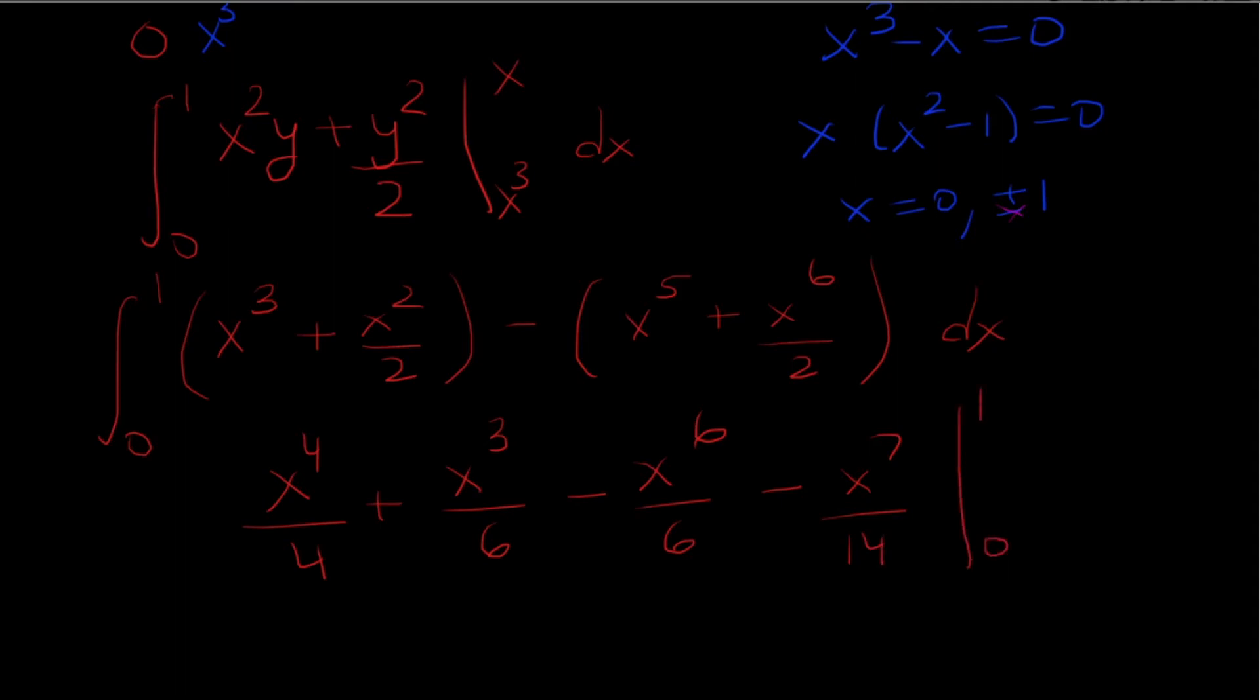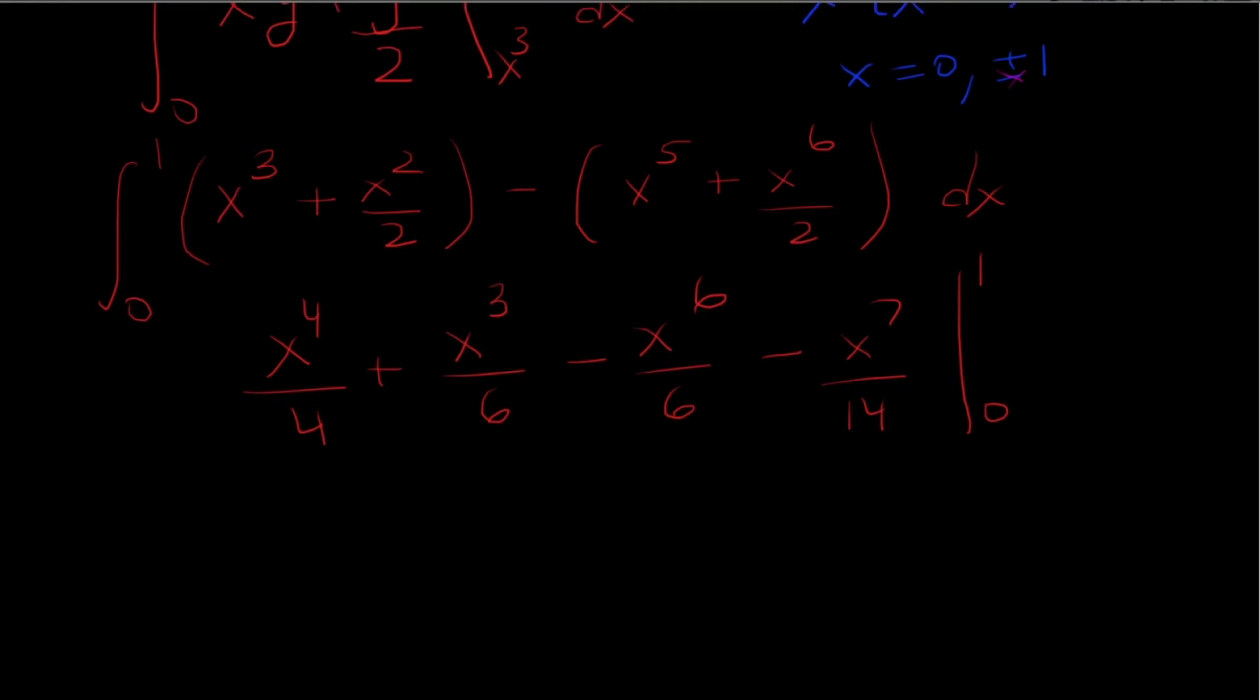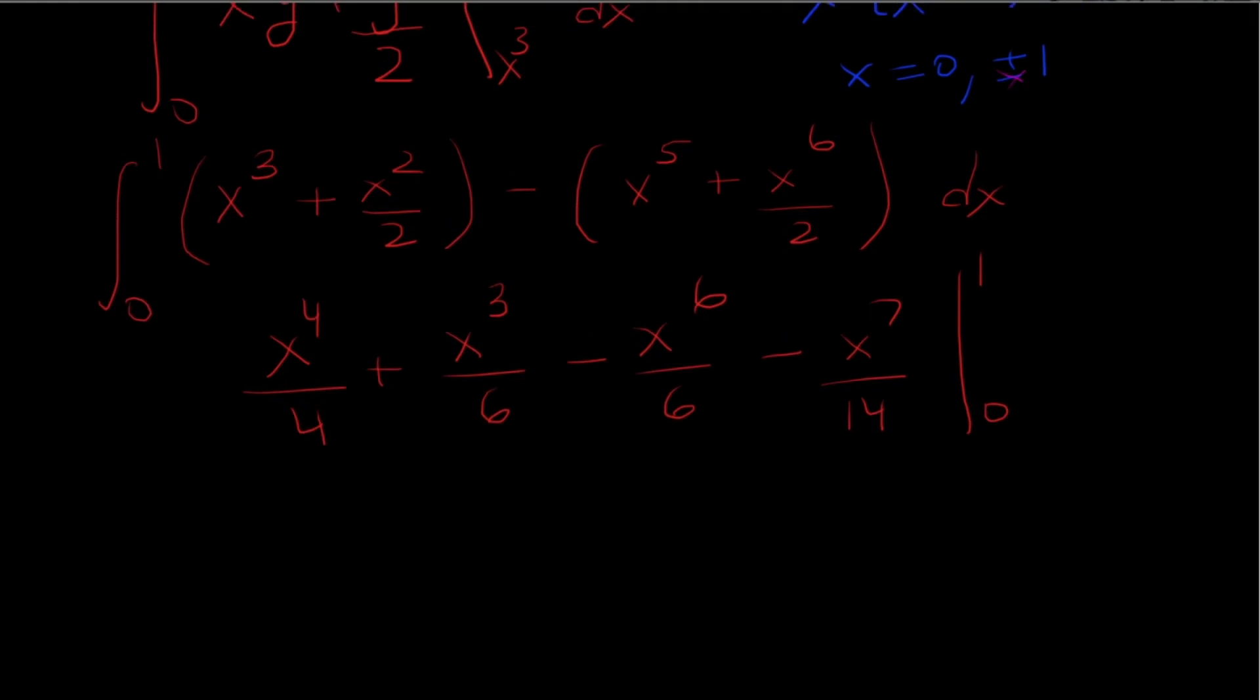And we're going from 0 to 1 so I need to plug in 1 and plug in 0. But when I plug in 0 I just get 0 so I'm not going to bother. That's 1 fourth plus 1 sixth minus 1 sixth minus 1 over 14. The 1 over 6s are going to cancel and we're left with 1 over 4 minus 1 over 14 and so the final answer is 5 over 28.